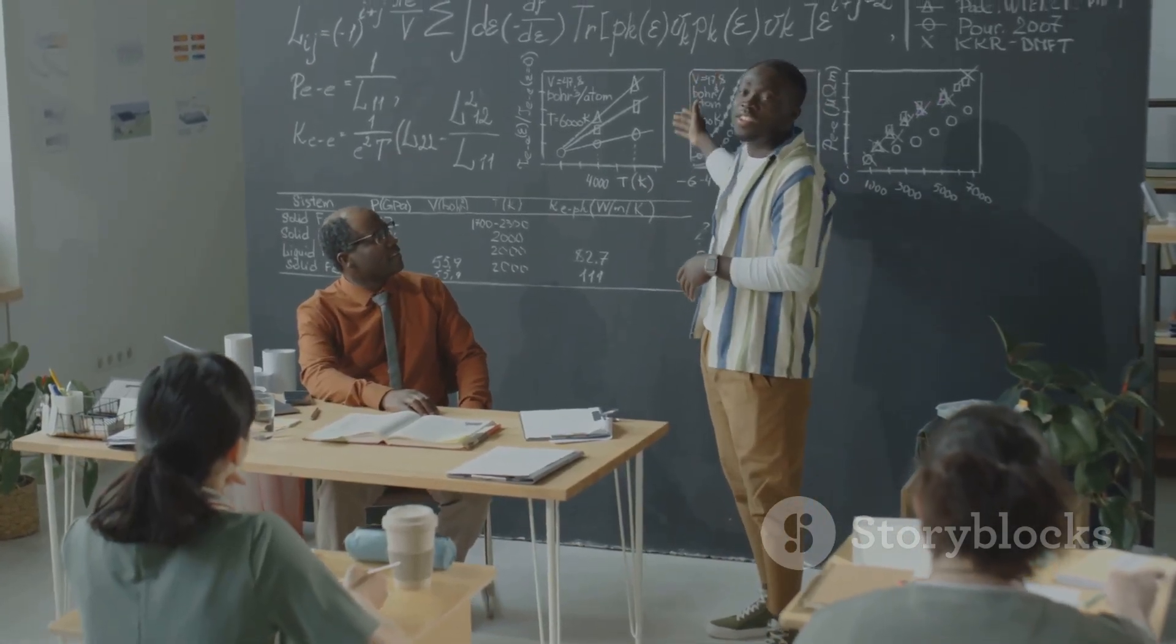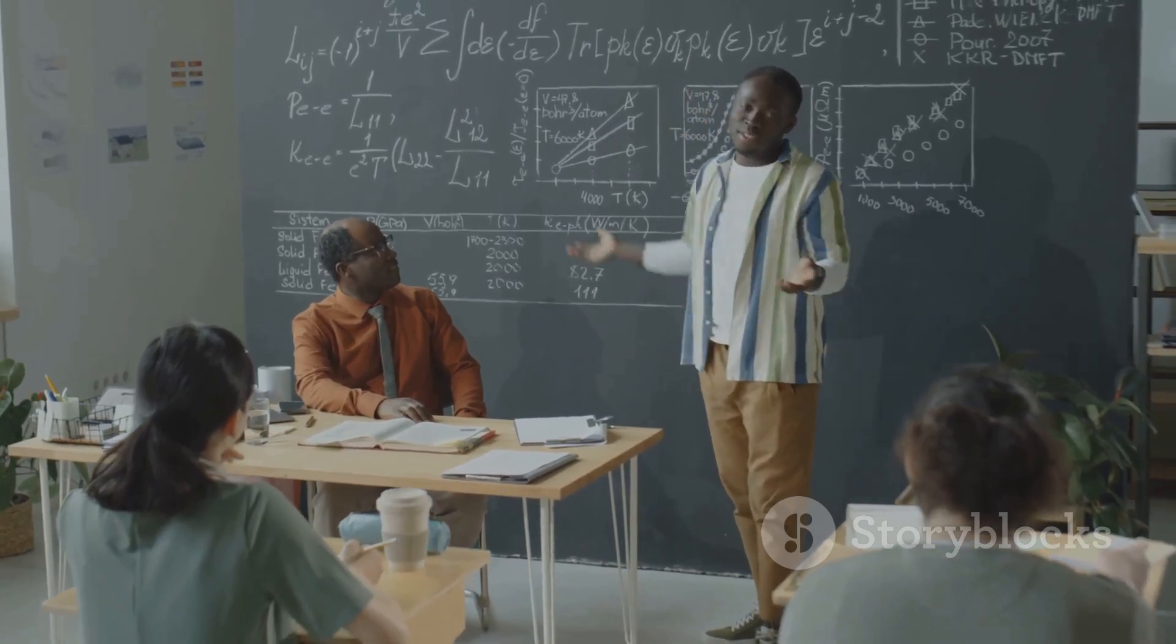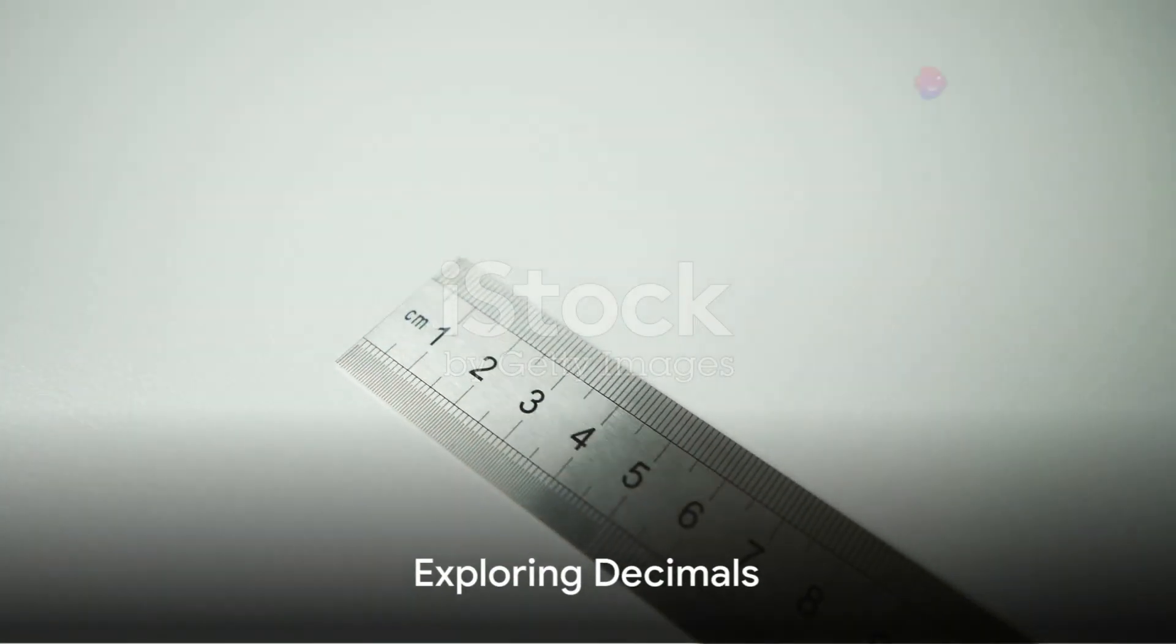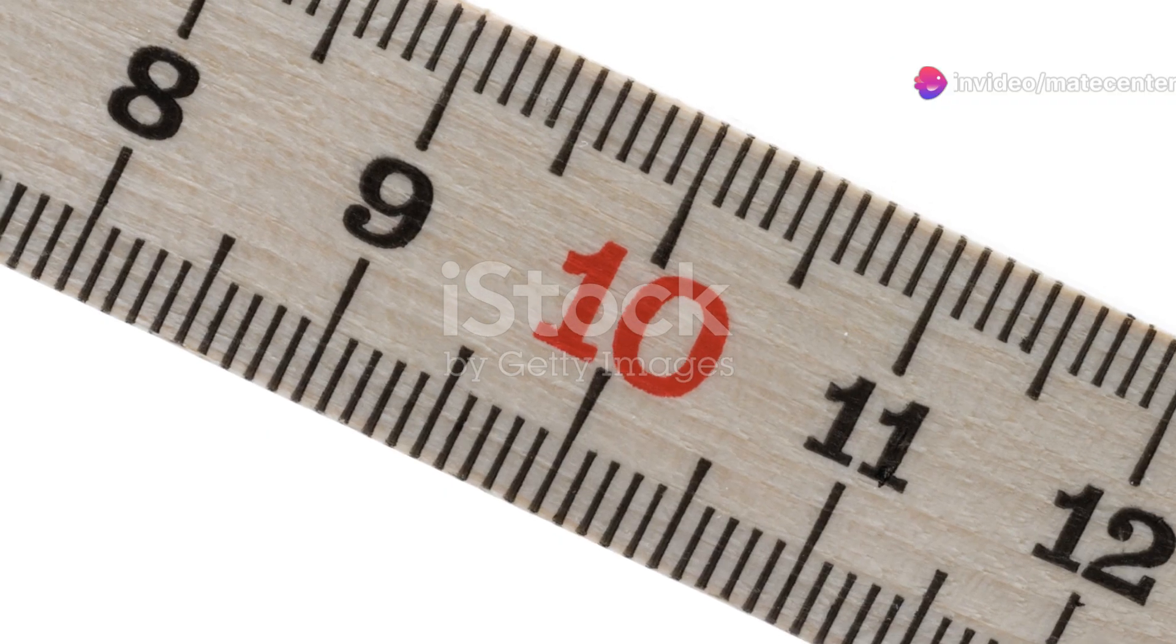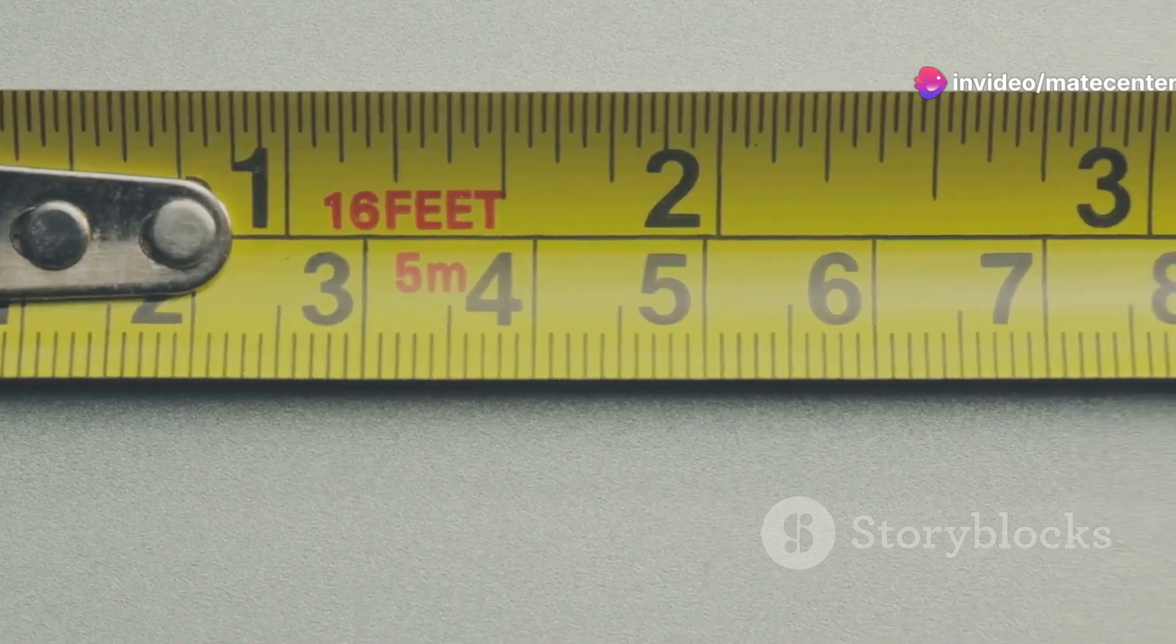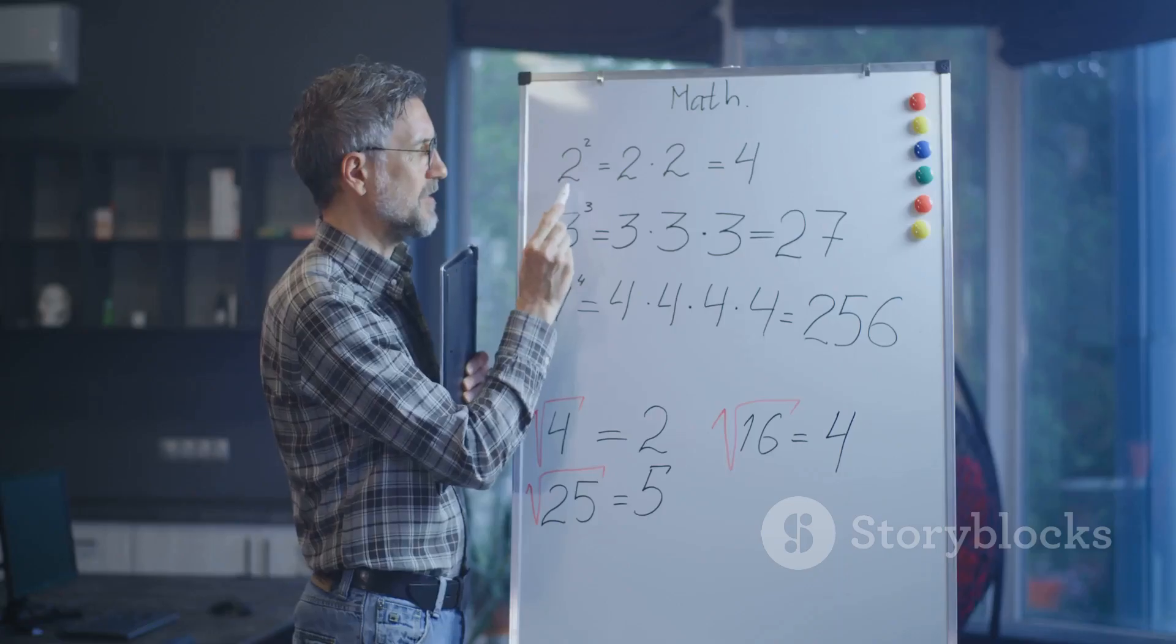Now let's venture into the realm of decimals. Picture a ruler. You want to measure something that's not quite one inch, but longer than half an inch. The space between those inch marks gets divided into tenths, and that's where decimals come in.